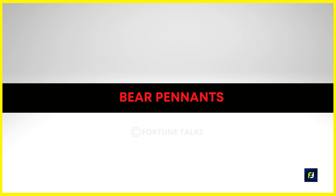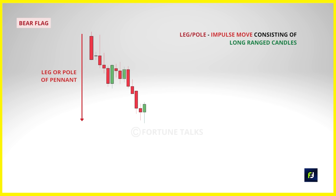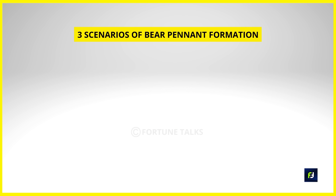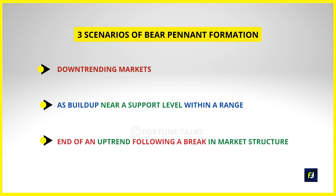A bear pennant is exactly the opposite of a bull pennant. It's a bearish continuation chart pattern with a leg comprising of impulse candles with a strong bearish body, followed by a tight consolidation with smaller candles and a contraction in volatility. Expect the price to break out explosively below the trend line support and continue with the trend. Though usually found in a downtrending market, you can also spot it when the price is about to break down from a range below a support level where a buildup forms as a bear pennant, or at the end of an uptrend where the break of structure is accompanied by a bear pennant.